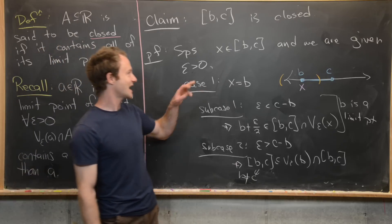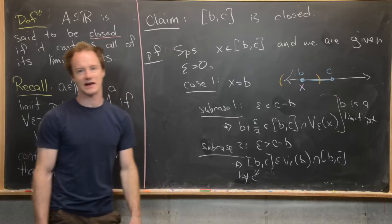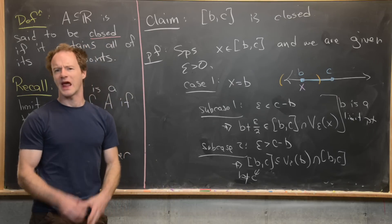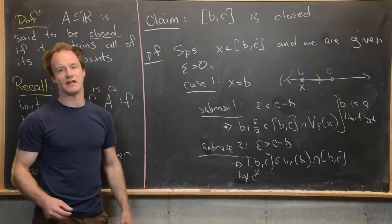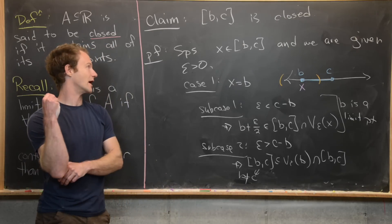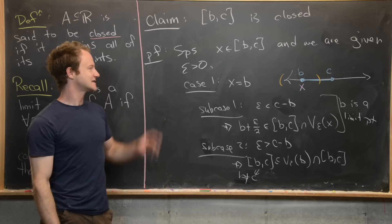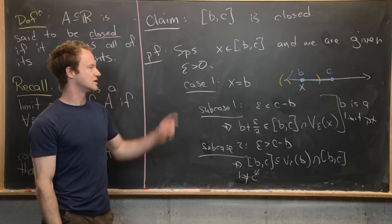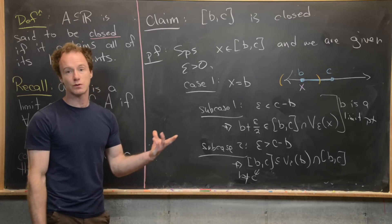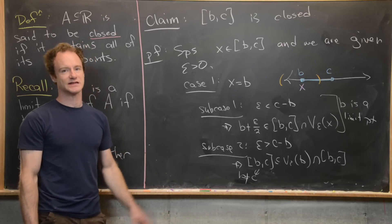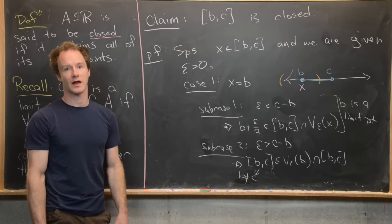So in the case that X is the left-hand endpoint, X is a limit point. The second case is when X is the right-hand endpoint, and similarly X is a limit point in that case as well. Next we look at what happens when X is strictly between B and C.